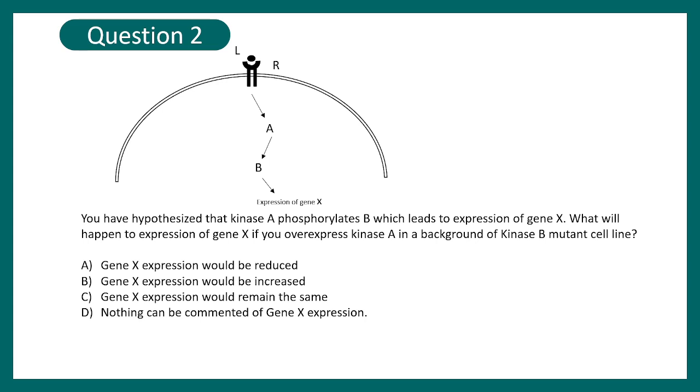Now the question is, if we have a mutant cell line where B is mutated and you over express A, what would happen? Gene X expression would be reduced, gene X expression would be increased, gene X expression would remain the same, and nothing can be commented about the expression levels. The correct answer here would be, so pause this video and think a little bit.